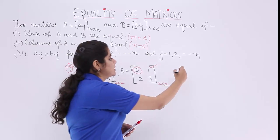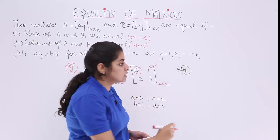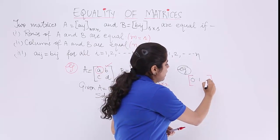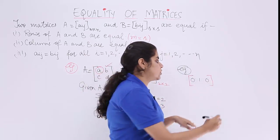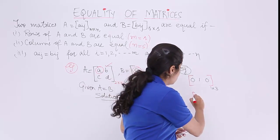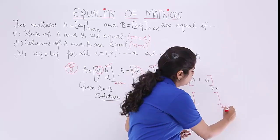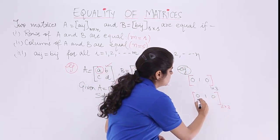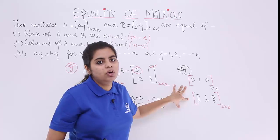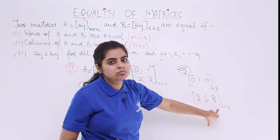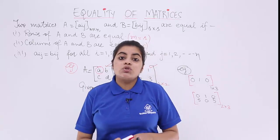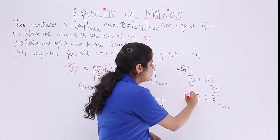Let's take example number 2. We have two matrices and we have to tell whether these matrices are equal or not. The first matrix is a row matrix with one row and three columns. The second matrix has two rows and three columns. Are the rows equal? 1 and 2 — no, the rows are not equal. Since the first condition itself is not satisfied, there is no need to check anything else. These matrices are not equal.